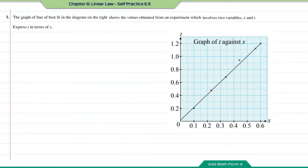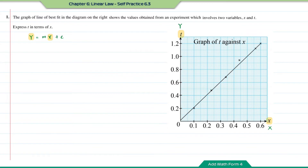Practice 6.3, question number 1. The graph of line of best fit shown on the right shows values obtained from an experiment involving two variables X and T. Express T in terms of X. Since the graph is a straight line, we can form the equation by writing it in the form Y equal to MX plus C. The variable labelled on the y-axis is the capital Y, and the variable on the x-axis is the capital X. Substituting, we get T equal to MX plus C. We need two pieces of information: M, which is the gradient, and C, which is the y-intercept.